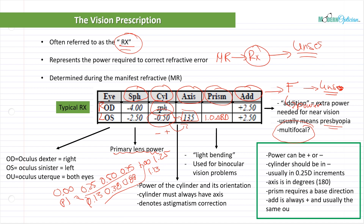As things get more and more modern, the labs that produce the prescriptions become more granular — very accurate with the powers they produce. You will sometimes see lab sheets come out in eighth diopters, and sometimes even hundredth diopters. For the time being, just know that most prescriptions in this course will be in quarter diopter increments. Axis is always in degrees on a 180-degree scale — 180 equals 0 — going from 1 to 179. Prism requires a base direction, and ADD is always plus; you'll never see a minus ADD.